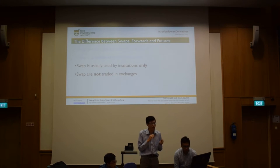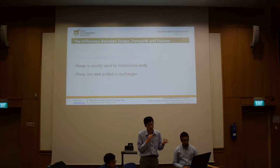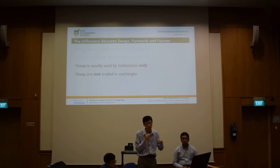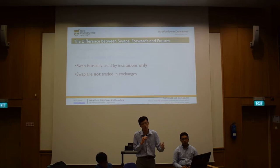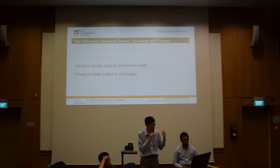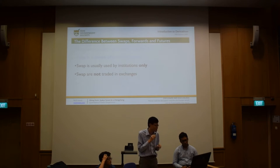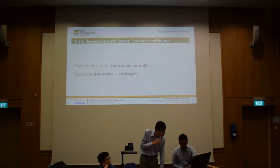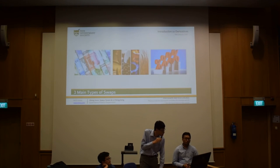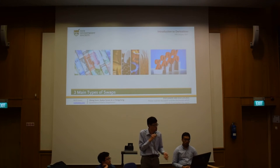The second difference is that swaps can only be traded by institutions, because swaps are particularly large in value and are not traded on exchanges. The reason is that if swaps were traded on exchanges and one party defaulted, the loss borne by the exchange could cause the exchange itself to default — and if the exchange defaults, all parties suffer. So swaps are not traded on exchanges; they are usually traded OTC. The three main types of swaps are currency swaps, commodity swaps, and interest rate swaps.